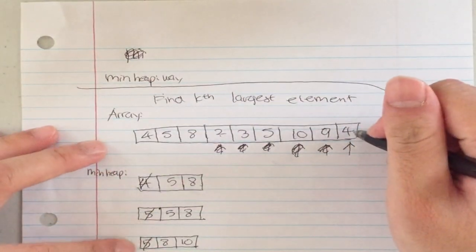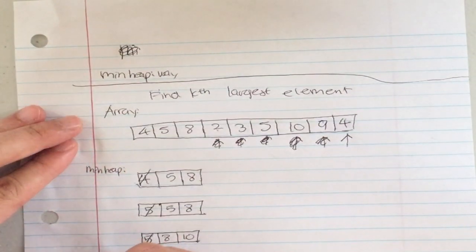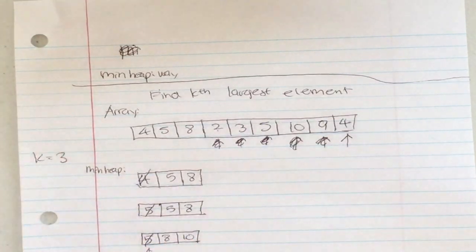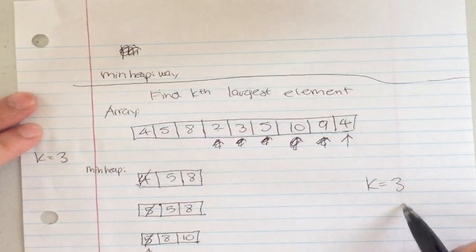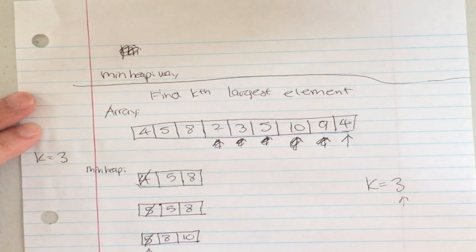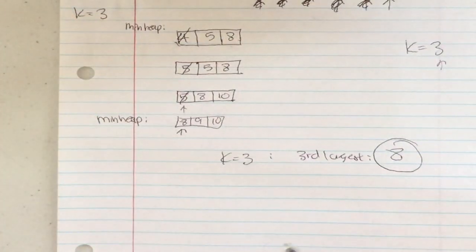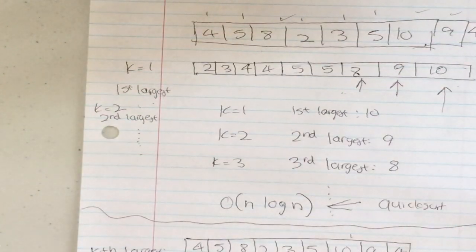Finally, four is not greater than eight, so we skip it. The final min heap is eight, nine, ten. The kth largest element — with k=3 — is the top of our min heap: eight. This matches what we'd find by sorting the array and counting from the end.